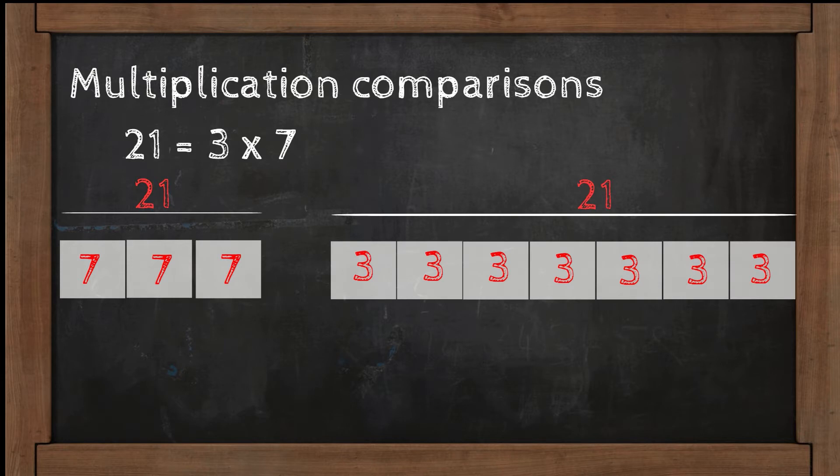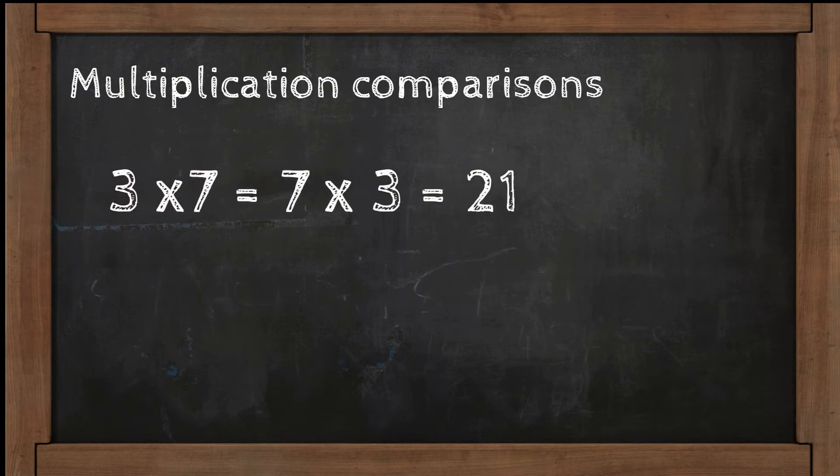Also, 21 is 7 times as many as 3. The commutative property means you can multiply two factors in any order and get the same product. 3 times 7 equals 7 times 3 equals 21.